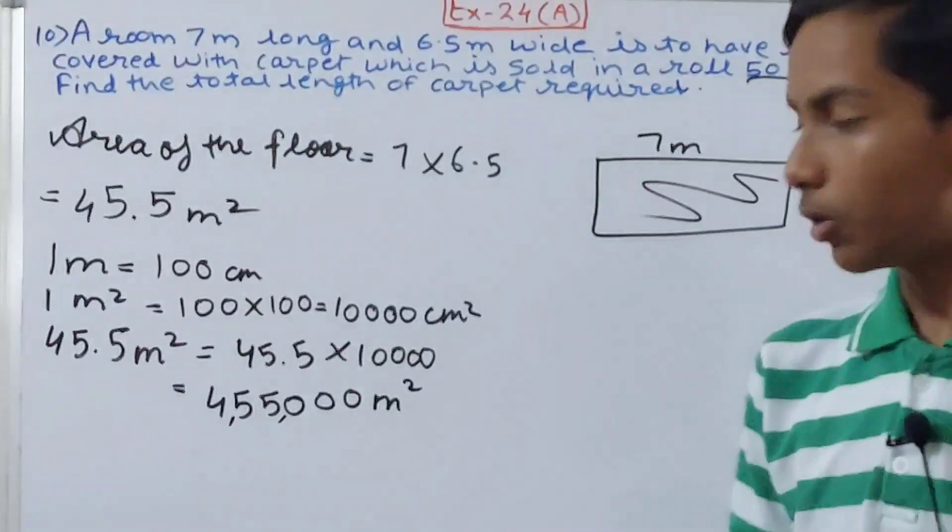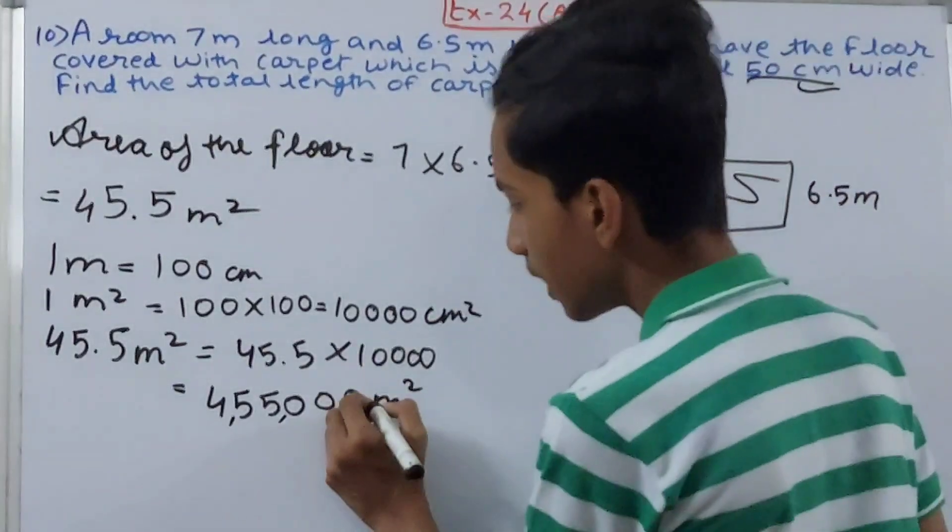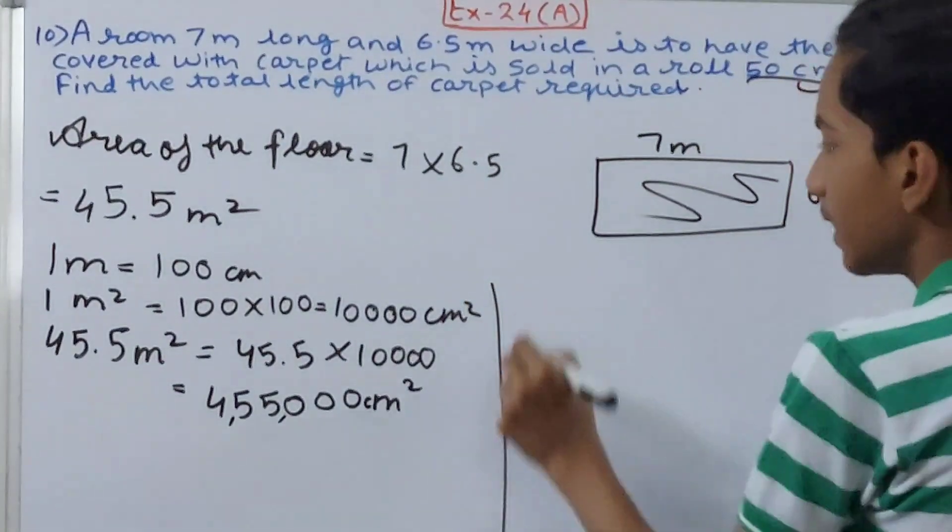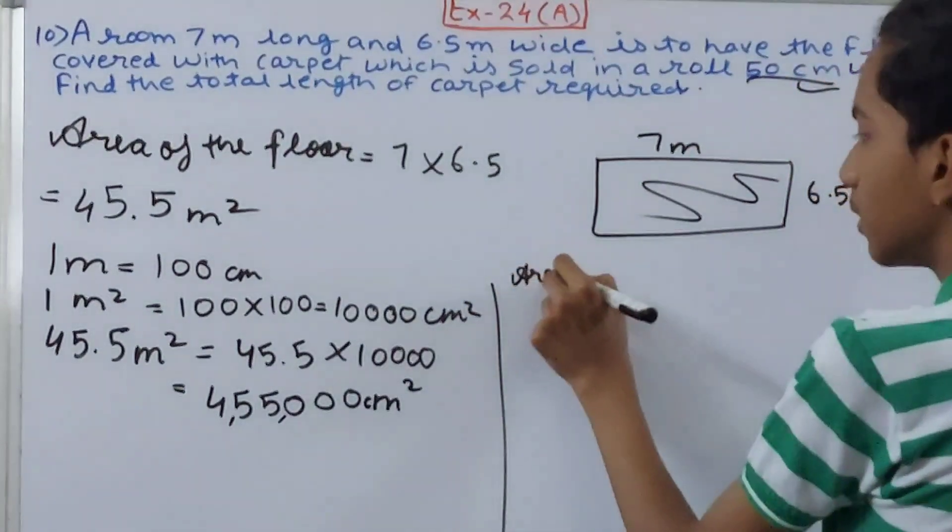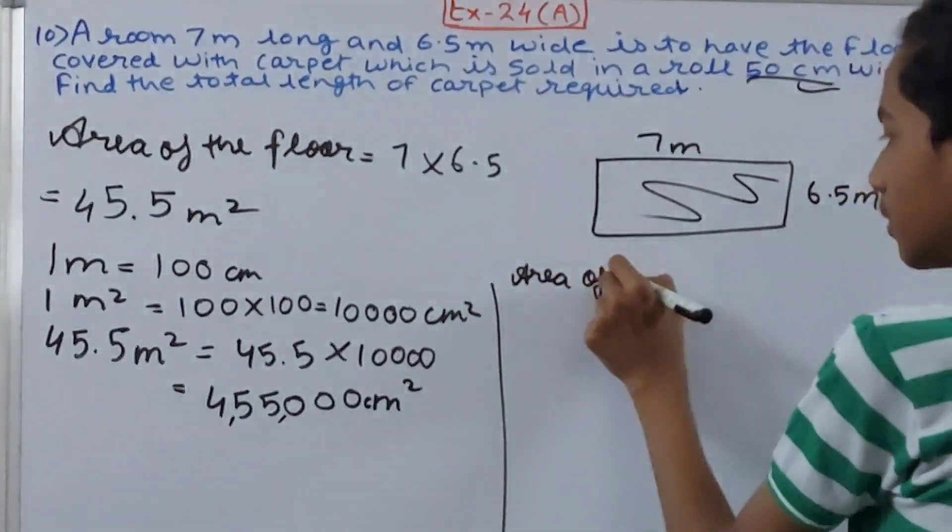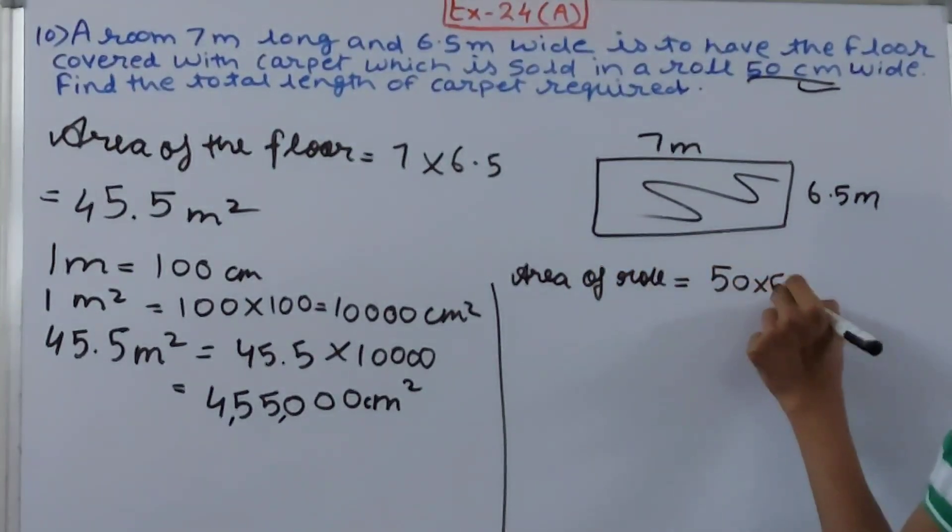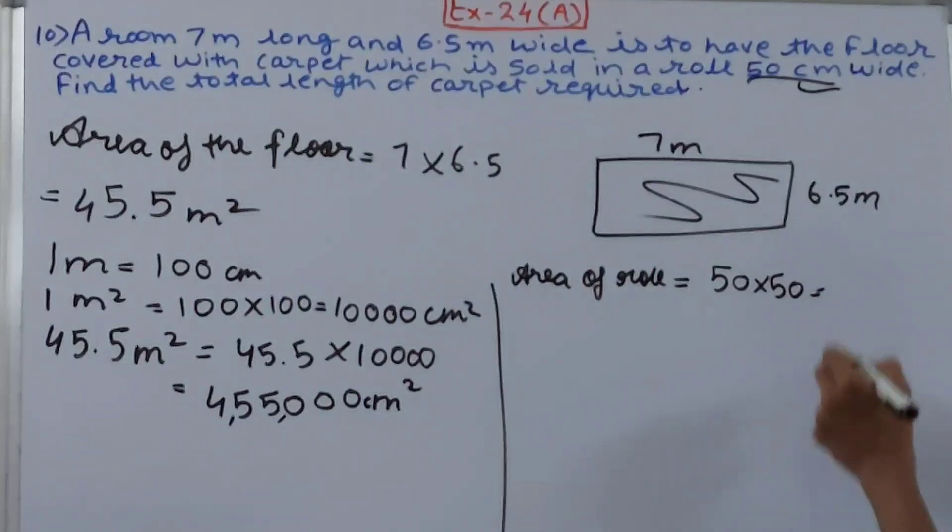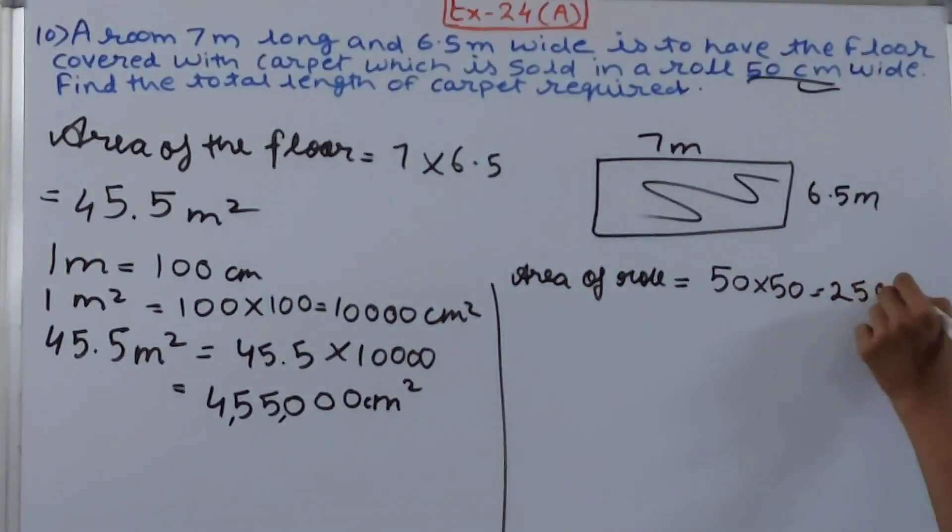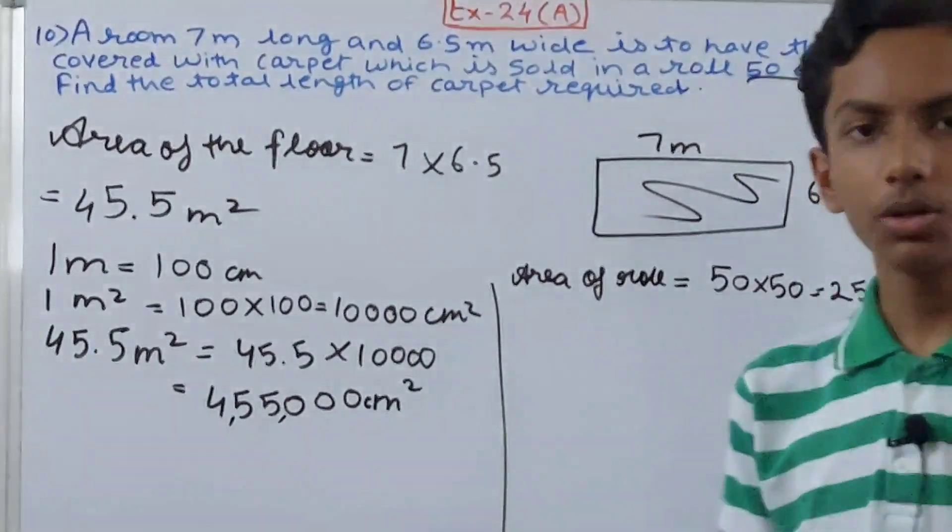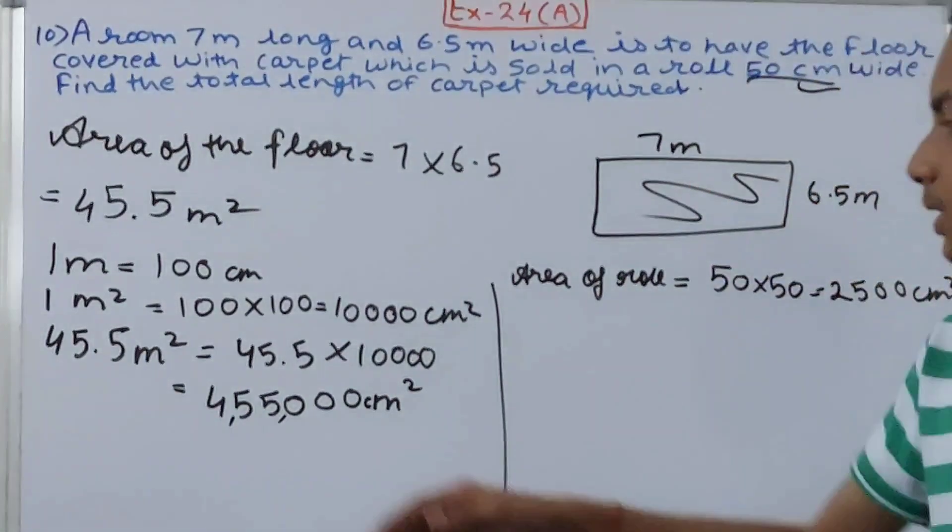Now we will find the area of the roll. That will be 50 into 50. What is it going to be? 5 into 5 is 25 and two zeros - 2,500 square centimeters. This is in centimeters so there is no need to change this.